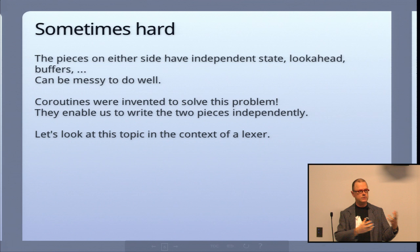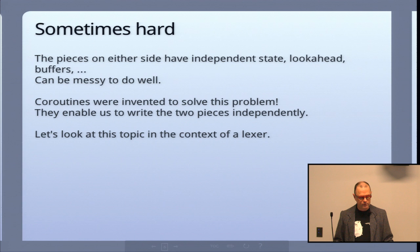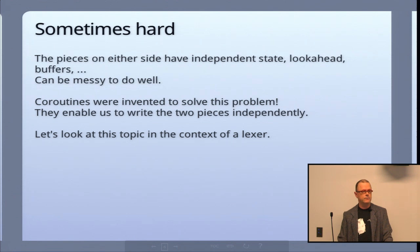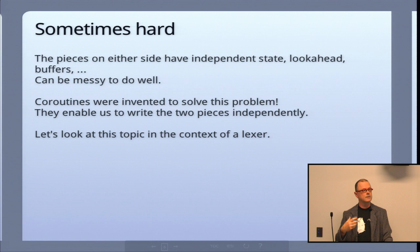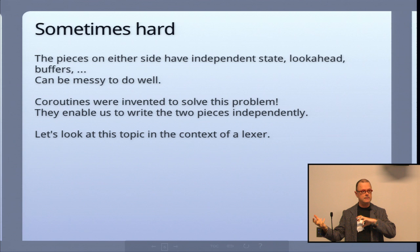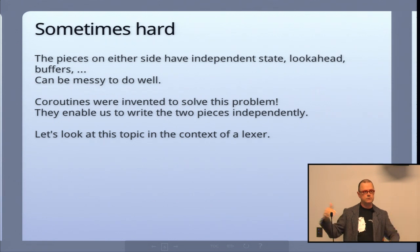These two pieces are particularly difficult because usually you've got buffering on each side, some lookahead, some state. You've got to peek ahead, look behind, and you're doing it on both sides at once. Coroutines were invented as a way of solving this particular problem, and they are kind of the origin of concurrent programming. When you do a coroutine model right, you get to write both pieces — the block reader and the line processor — completely independently, and they switch control as necessary.